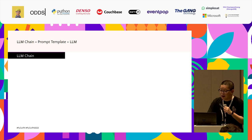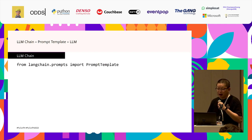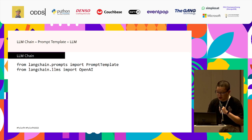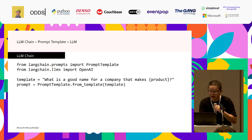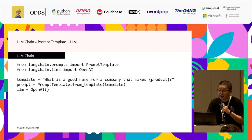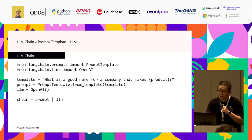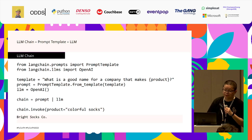Let's get started with the most basic chain or sequence of calls. The most basic chain consists of a prompt as input and a language model to generate an output. First, we import the prompt template and OpenAI language model. We create a template with a product as an input variable and create a prompt from the template. We instantiate the language model, compose the chain using pipe syntax, then generate output using the invoke method, and we get the response as a string.